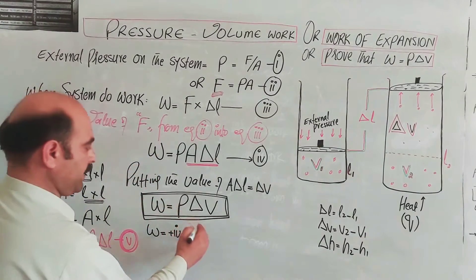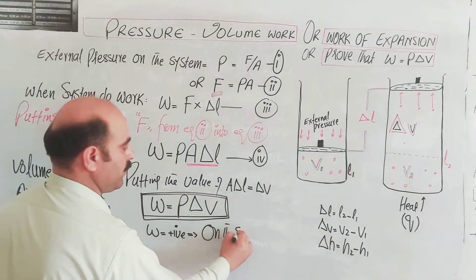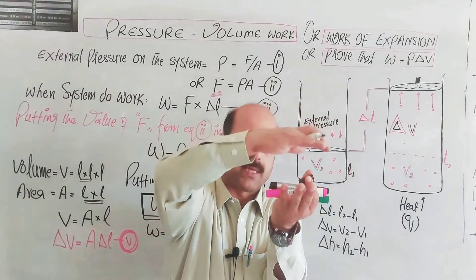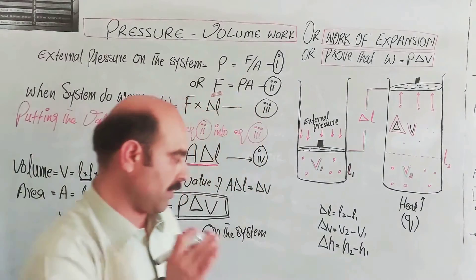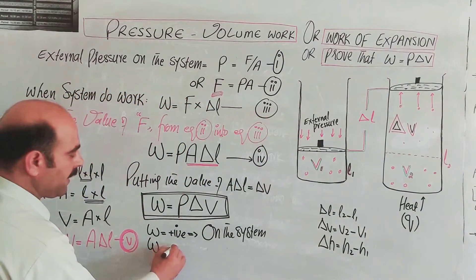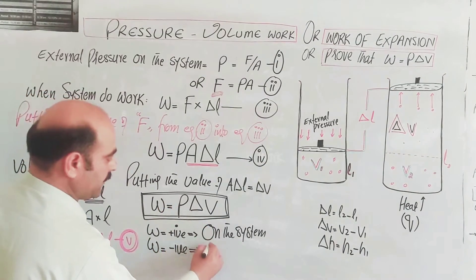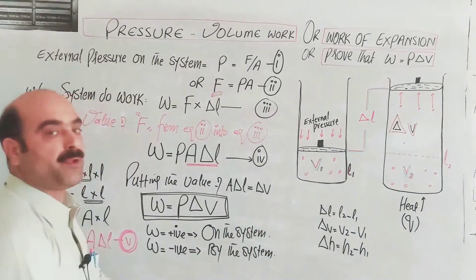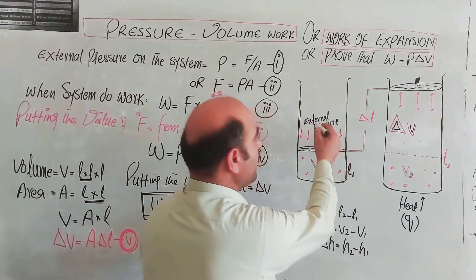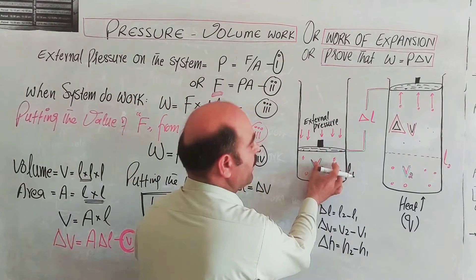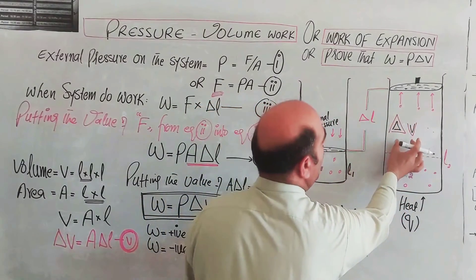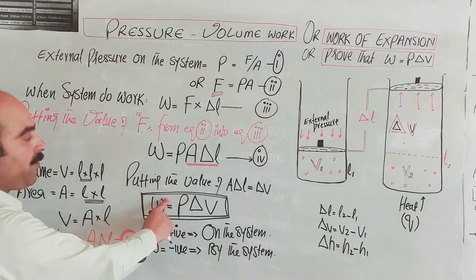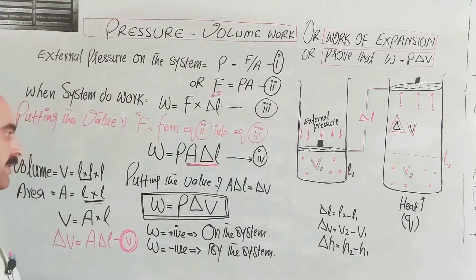W equals P delta V is positive when work is done by the system. When work is done on the system, W will be taken as negative. When work is done by the system against the external pressure, this is called work done by the system and it is negative. W will be substituted into the first law of thermodynamics.